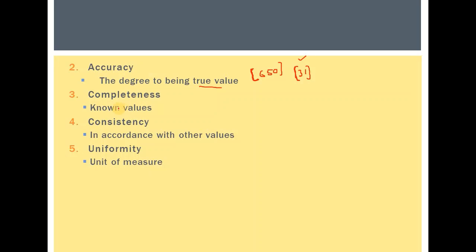Completeness refers to how many missing values there are in a dataset. The more missing values, the less complete a dataset is going to be, and therefore more effort is going to be required to complete that dataset or to come up with alternate approaches to deal with this problem.